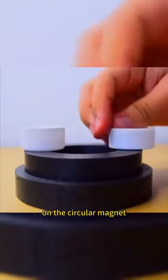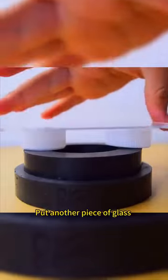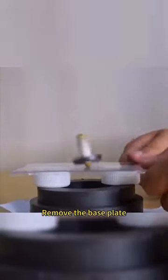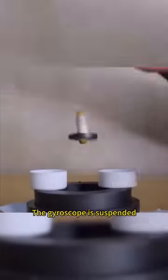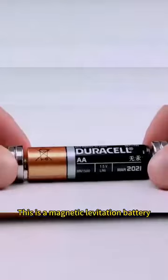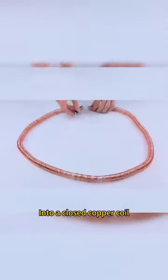Place three bottle caps on the circular magnet. Put another piece of glass to spin the gyroscope. Remove the base plate. The gyroscope is suspended. This is a magnetic levitation battery. Magnets on both ends into a closed copper.